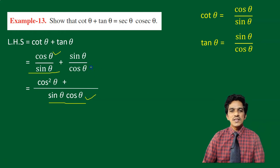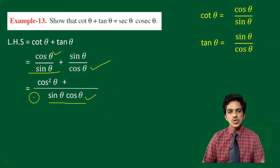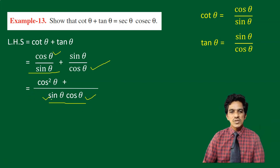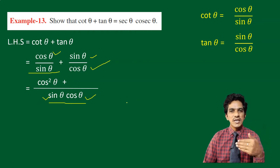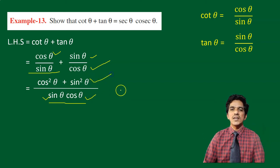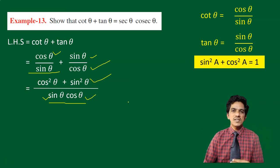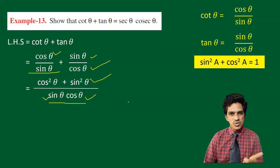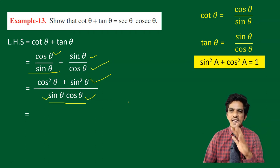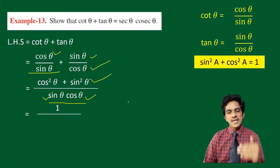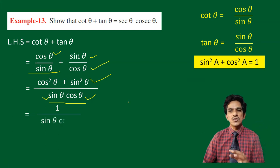Plus, for the second fraction, the denominator is cos theta and the LCM is sin theta into cos theta. So we multiply the numerator sin theta by the extra factor sin theta, giving sin theta into sin theta which is sin square theta. Now observe the numerator — we have cos square theta plus sin square theta. Using the first identity, sin square a plus cos square a is equal to 1, the numerator becomes 1. So we have 1 by sin theta into cos theta.